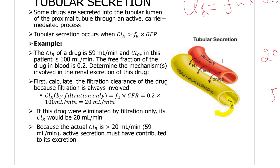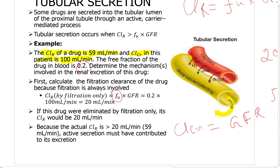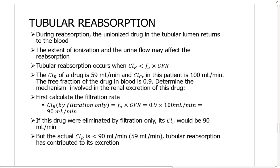So because drug is coming in via secretion, the total clearance is going to be higher. Here is the example: if total clearance is 59 milliliters per minute and the creatinine clearance (GFR) in this patient is 100 milliliters per minute, with a given free fraction (fu), you calculate clearance by filtration using fu × GFR. Since creatinine clearance equals GFR, you use the given creatinine clearance. Filtration clearance comes out to 20 milliliters per minute, but total clearance is 59 milliliters — so secretion is involved.